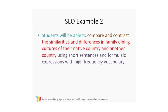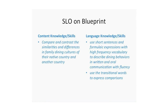Now let me give you another example. You tell me what should be put in the content knowledge and the language knowledge on your blueprint. Students should be able to compare and contrast similarities and differences in family dining cultures of their native country and another country — that is the content. In terms of language, not only are they using short sentences and formulaic expressions, but they should also learn transitional words to express comparisons and contrasts.